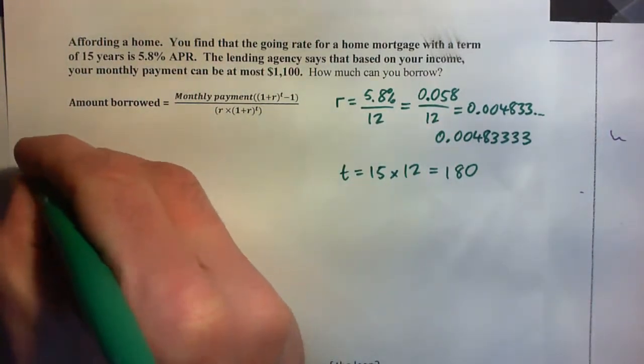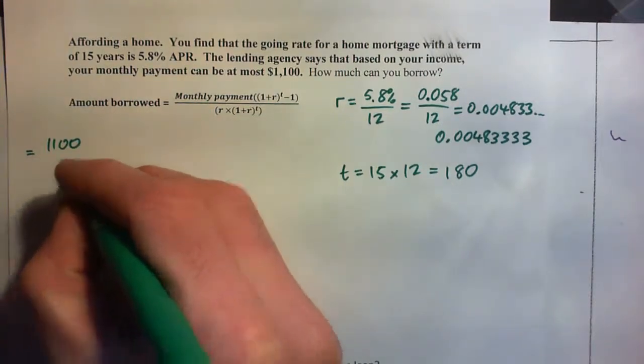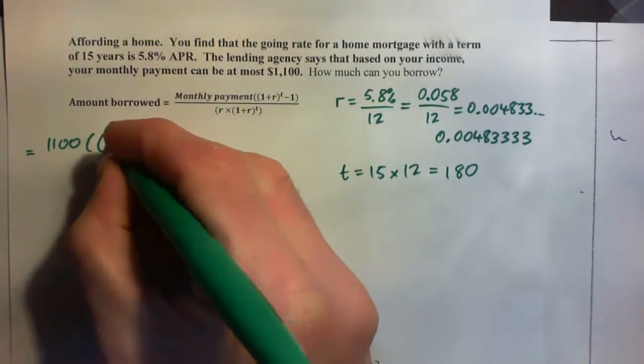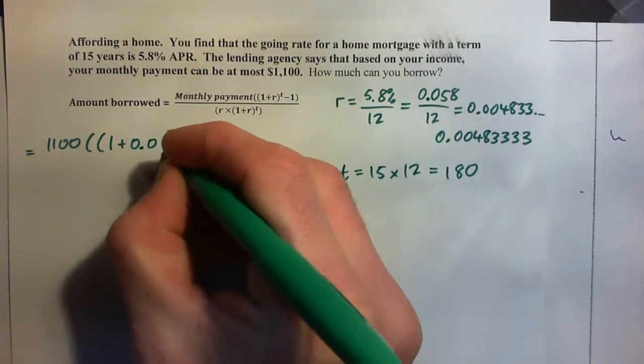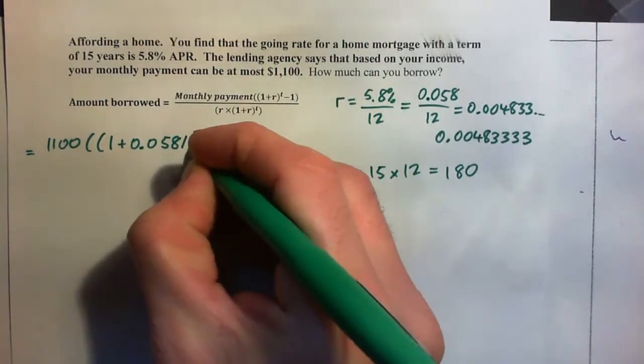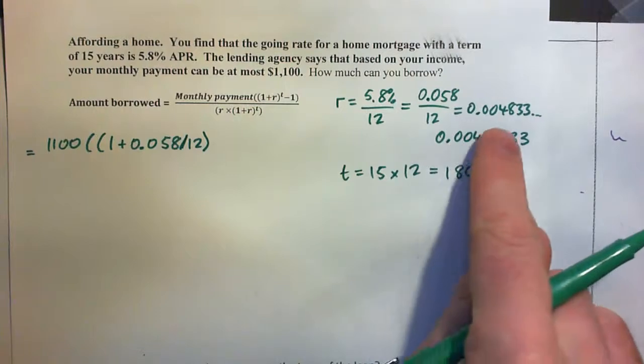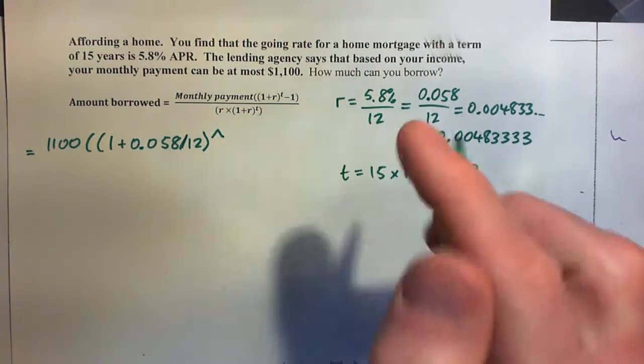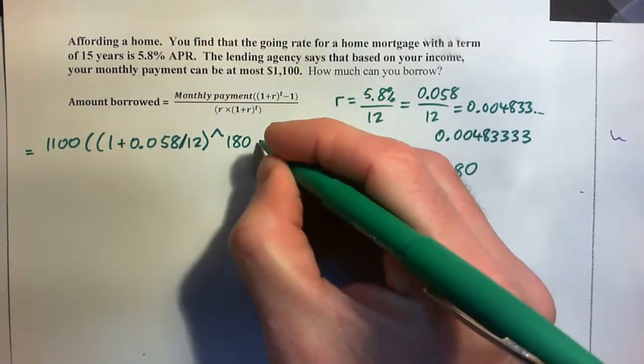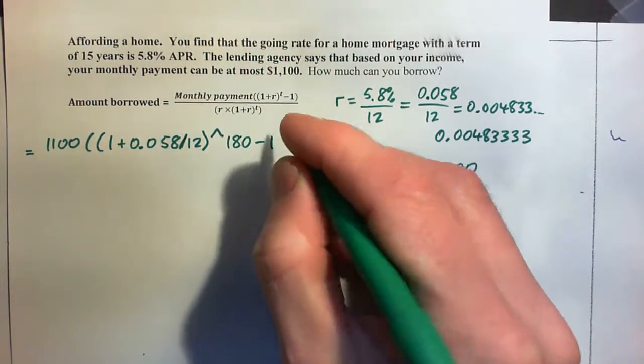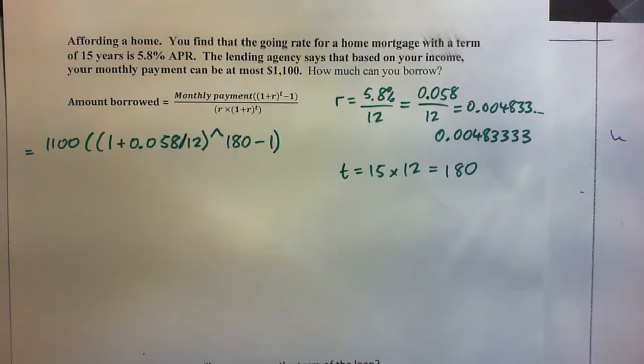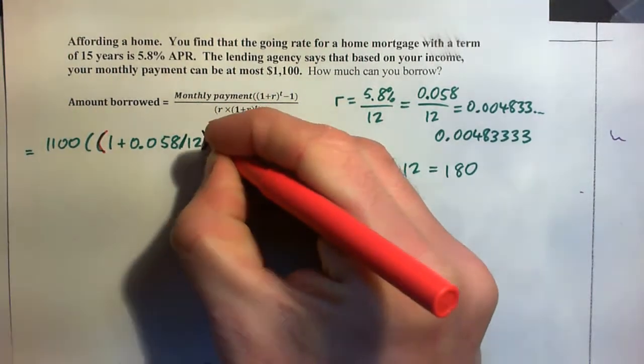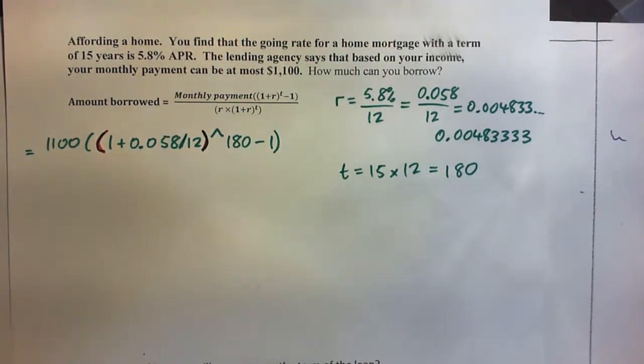Our amount borrowed is 1100 times 1 plus R to the power of T. I'm going to go 1 plus 0.058 over 12. I'm going to leave that in the calculator to figure it out, to hold all my threes, to the power of T, to the power of 180. Minus 1. Now I have to close off the parenthesis. So these parenthesis are just for the 1 plus R. That's just for the 1 plus R.